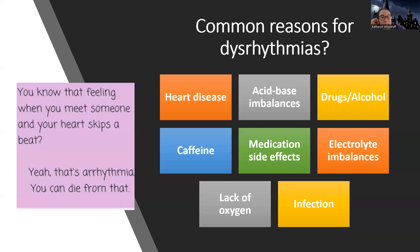Acid-base imbalances can lead to dysrhythmias. Drug and alcohol use — especially things like cocaine — are really hard on the heart. Caffeine is a big one. When we talk about SVT, one of the biggest risk factors is being a nursing student who drinks too many Celsius. Or if you know Mr. Andrews, he is very high risk for dysrhythmias because he drinks too much caffeine.